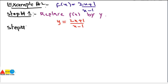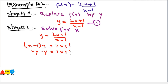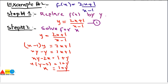Step number 2 is to solve for x. We have y = (2x + 1)/(x - 1), so (x - 1)·y = 2x + 1, giving xy - y = 2x + 1. Rearranging: xy - 2x = 1 + y. Taking x common: x(y - 2) = 1 + y, so x = (1 + y)/(y - 2).